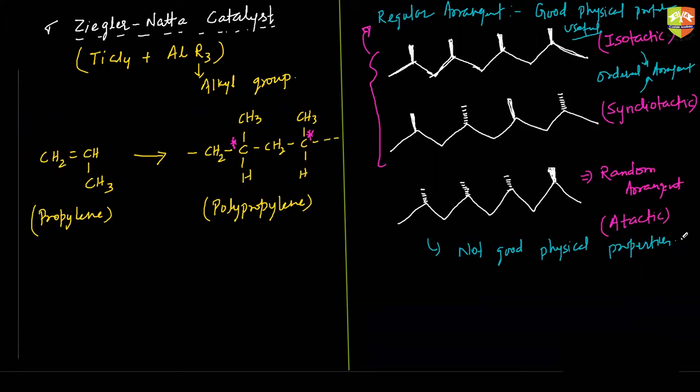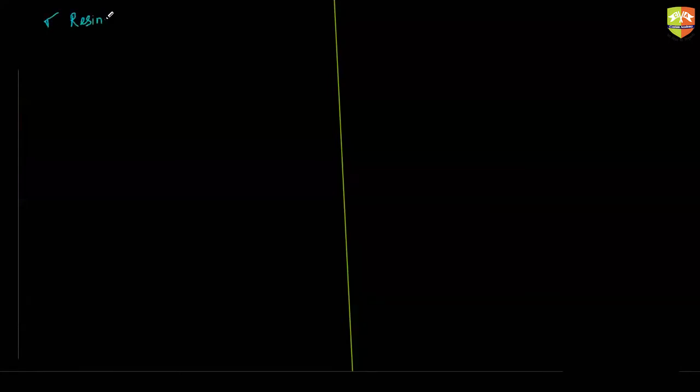The last thing we have to discuss in this chapter is resins. What are resins? Some plant product — you must have seen on the tree there's some yellowish, orange color semi-liquid substance.